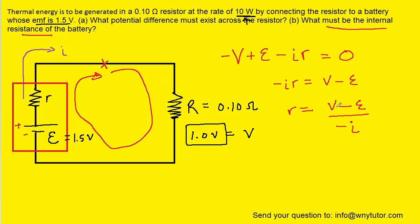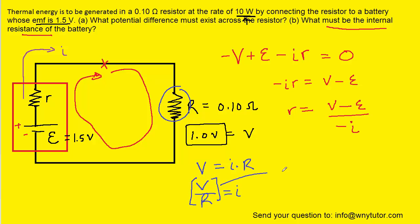We know V equals 1 volt and the EMF is 1.5 volts, but we haven't yet found the current. We can use Ohm's law on the resistor: the potential difference equals the current multiplied by the resistance, so current I equals the potential difference divided by the resistance. We can then plug this expression for the current into our equation for the internal resistance.